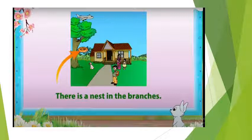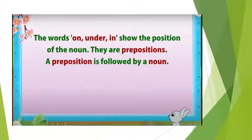There is a nest in the branches. So you can see that there is a nest in the branches. In is a preposition. The words on, under, in show the position of the noun. They are prepositions. A preposition is followed by a noun.